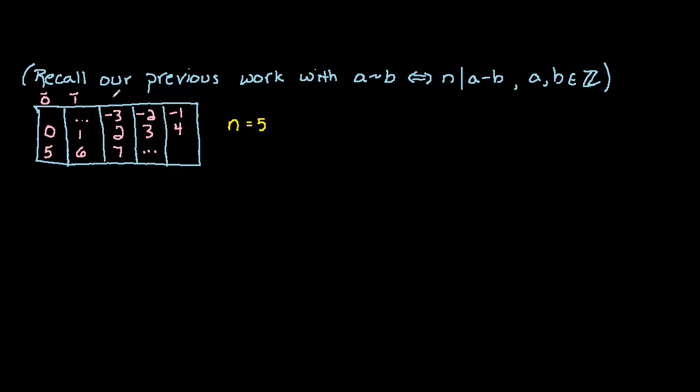Similarly we have the equivalence class of 1, 2, 3, and 4. Again you could test that the difference between any two integers here in an equivalence class is divisible by 5. For example the difference between 2 and 7 is certainly divisible by 5, so 2 and 7 are in the same equivalence class.